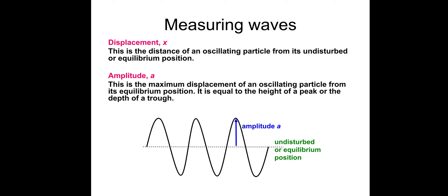Displacement X is the distance of an oscillating particle from its undisturbed or equilibrium position. Each part of this wave would be an individual particle that oscillates up and down, and that distance of the arrow is the displacement. The amplitude is the maximum displacement of an oscillating particle from its equilibrium position, and it's equal to the height of a peak or the depth of a trough. The peak is at the top, the trough is at the bottom, and the dashed line is the equilibrium position — its starting point.